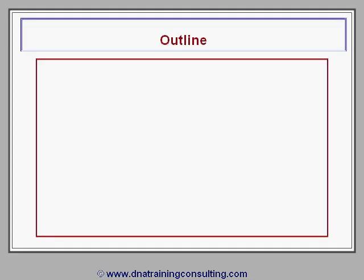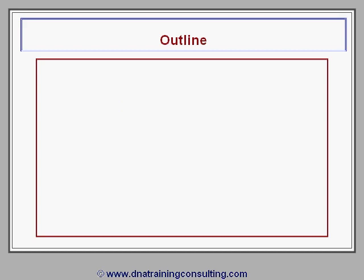This module consists of five chapters. Chapter 1 examines the principal contractual terms of a CDS, its cash flows before and after a credit event, and the similarities with, and differences from, more traditional credit instruments, such as loans and bonds.